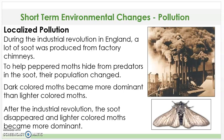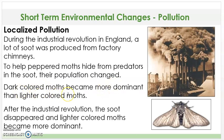The next type of short-term environmental change is pollution. During the Industrial Revolution in England, a lot of soot was produced from factory chimneys — that's the black, smoky substance you see in this picture. To help the peppered moths hide from predators in the soot, their population changed. Dark-colored moths became more dominant than lighter-colored moths, because the darker color made them easier to hide.